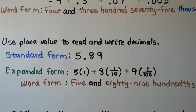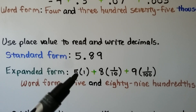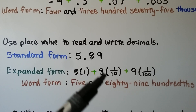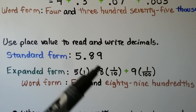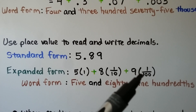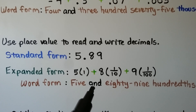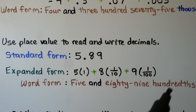We can use place value to read and write decimals. Here we have in standard form five and eighty-nine hundredths. In expanded form, that's five times one, plus eight times one-tenth, because it's in the tenths place, plus nine times one-hundredth, because it's in the hundredths place. In word form, it would be read as five AND eighty-nine hundredths.